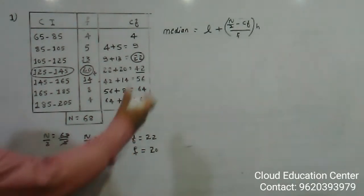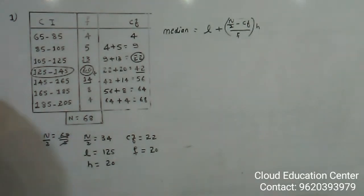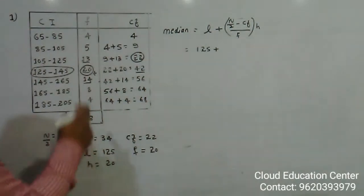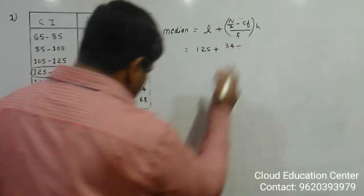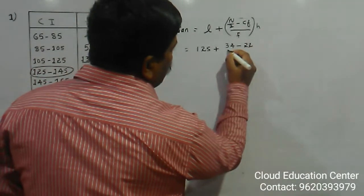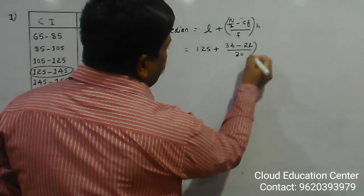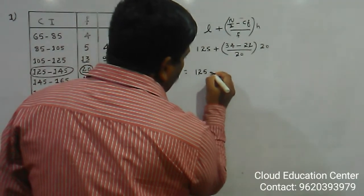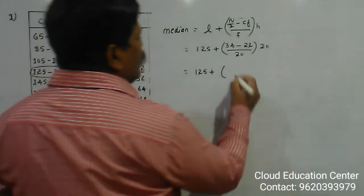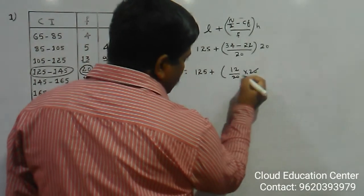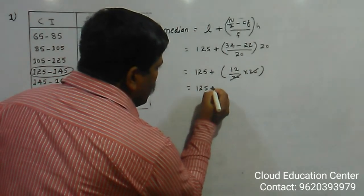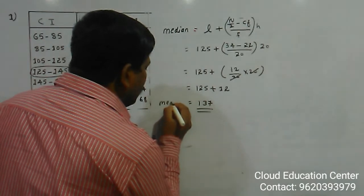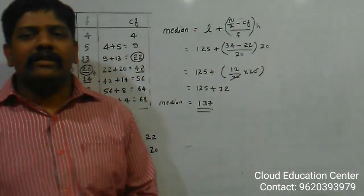We have everything needed. Substituting: Median = 125 + [(34 − 22) / 20] × 20. The 20s cancel: 125 + 12 = 137. So your median value is 137.